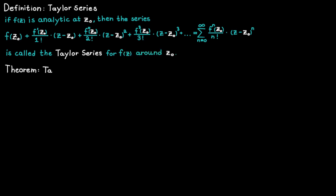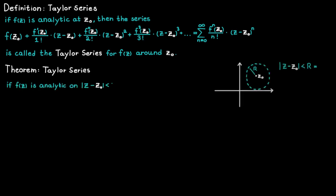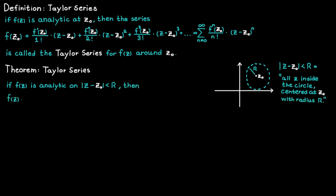The next theorem is really important. It states that if a function is analytic on some disk — which simply includes all the c values inside the circle centered at c naught with radius r — then we know that the function will be equal to its Taylor series for all c values on this disk.